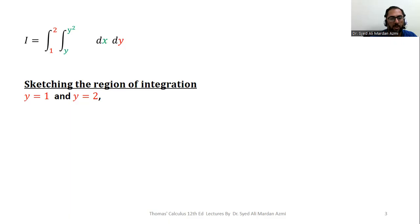y equal to 1 and y equal to 2 will provide you 2 boundaries and x equal to y and x equal to y squared will provide you 2 more boundaries. So, we will have 4 boundaries for our region of integration in our double integral.